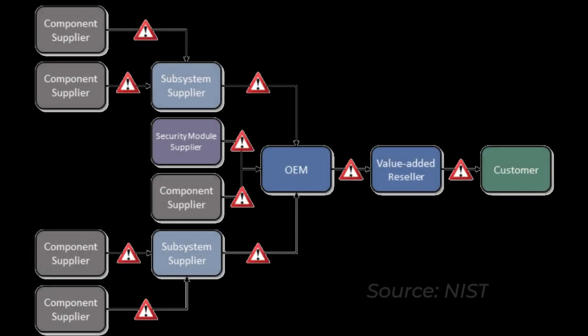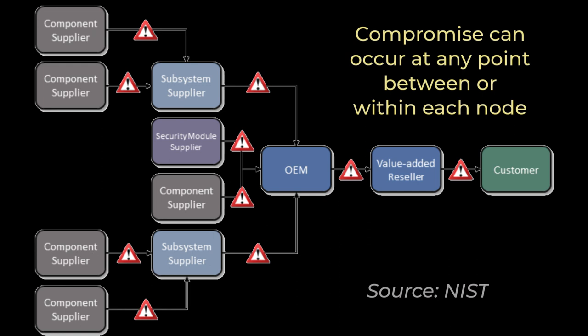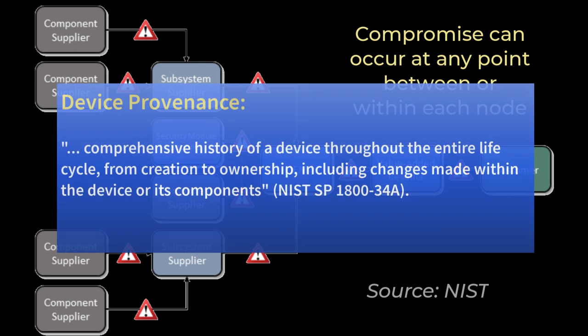As shown in this graphic from the NIST document, various steps can exist along a supply chain, many of which an organization has no control over. Ensuring safe device use requires understanding the device's provenance — the comprehensive history of a device throughout the entire life cycle, from creation to ownership, including changes made within the device or its components.